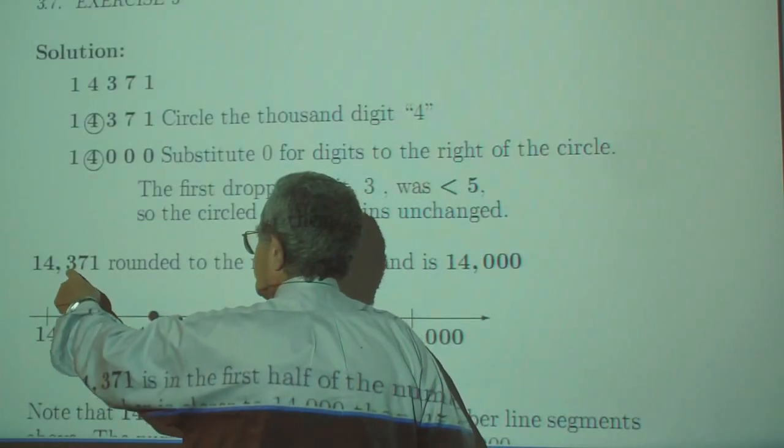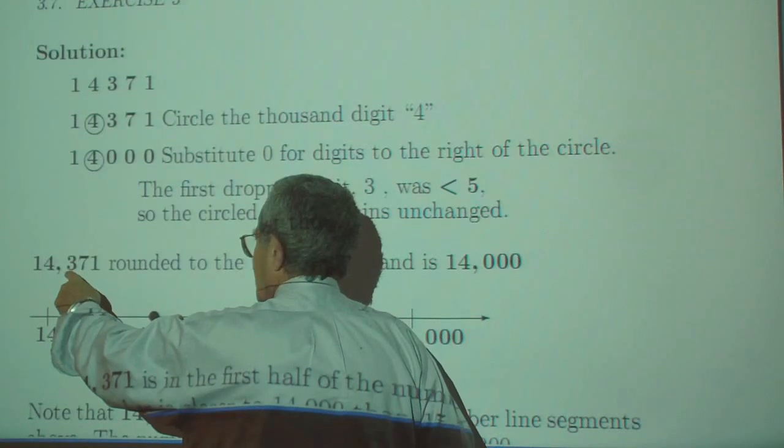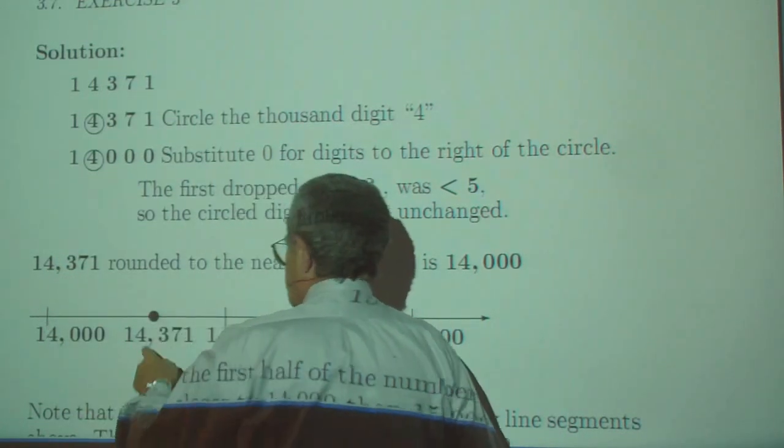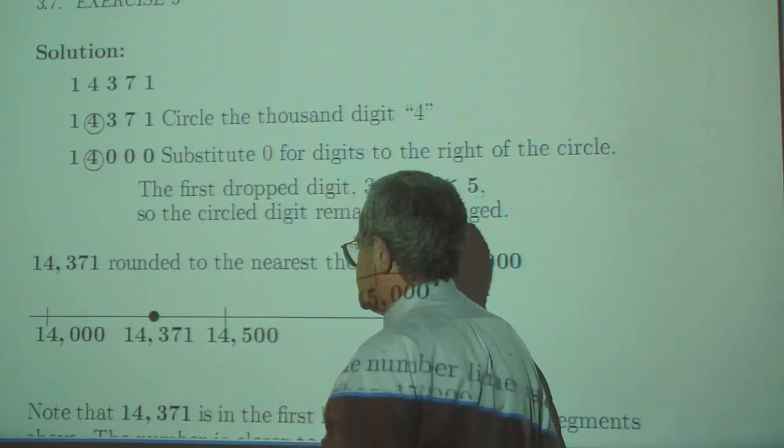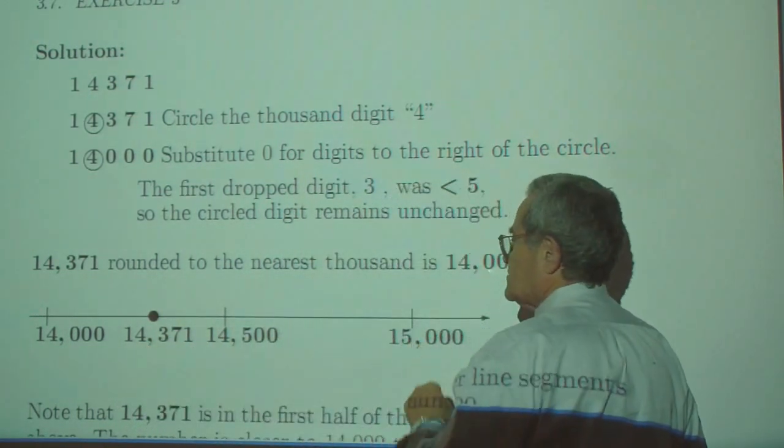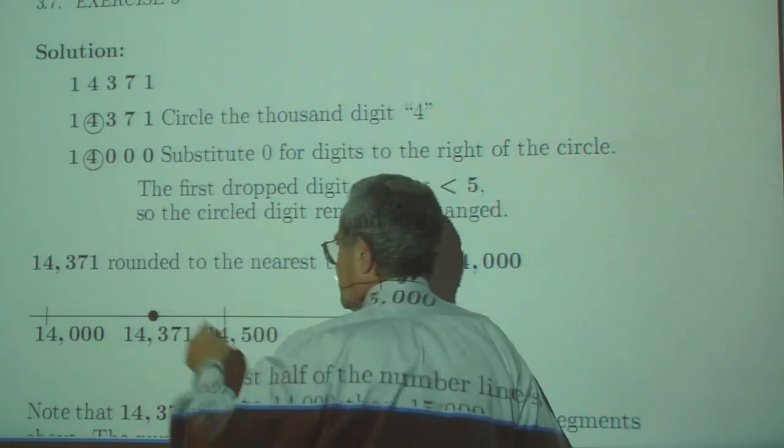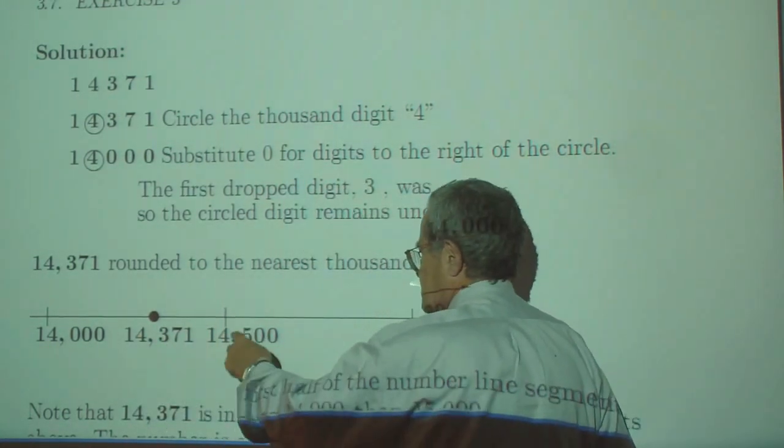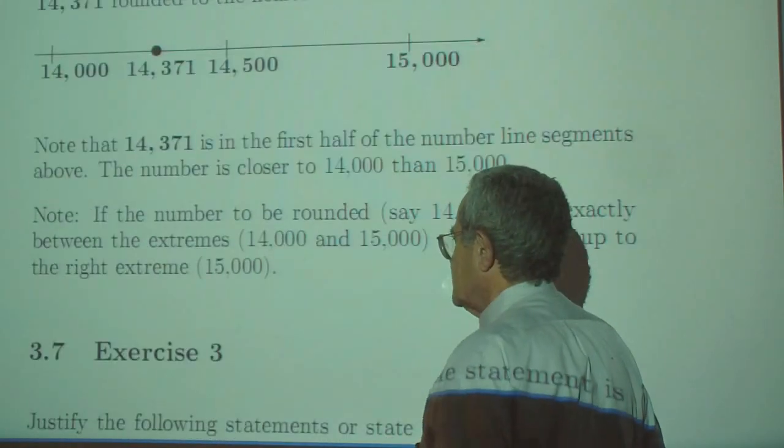And since the first digit you drop is less than 5, keep the 4 as it is. Note that 14,371 is between 14,000 and 15,000. And it is closer to 14,000 than 15,000 because 14,500 is in the middle.